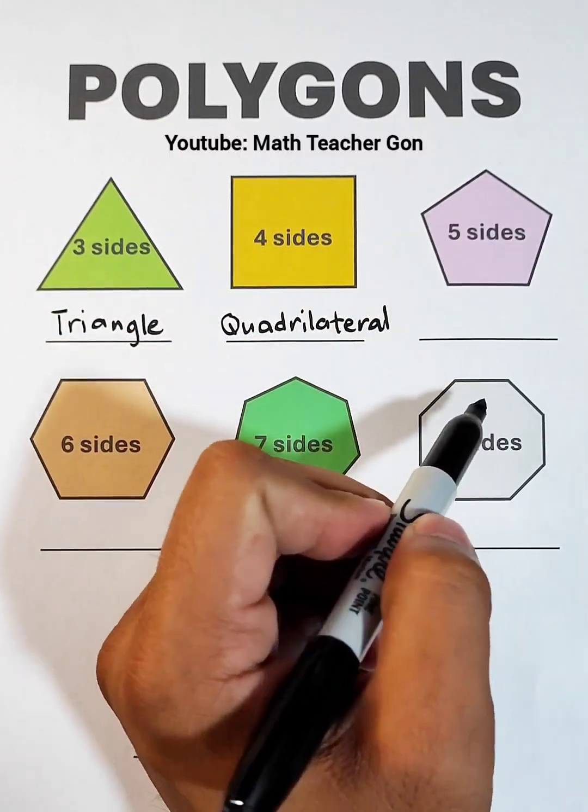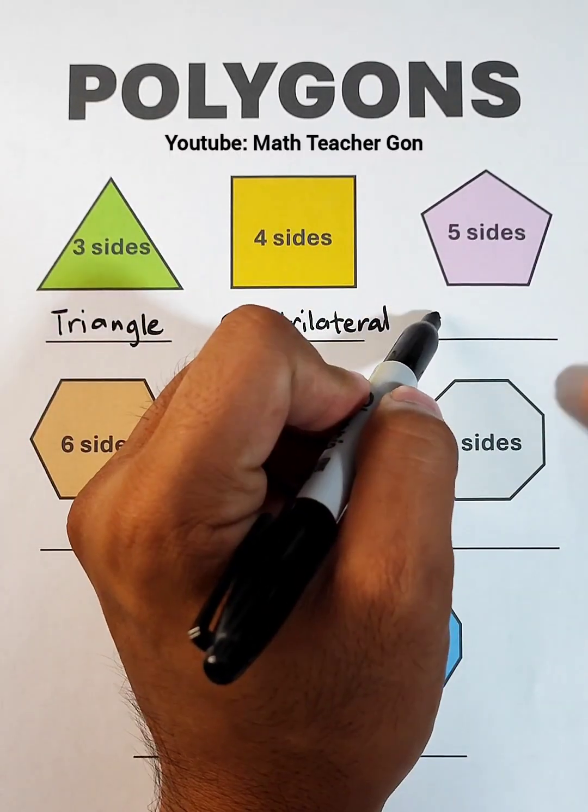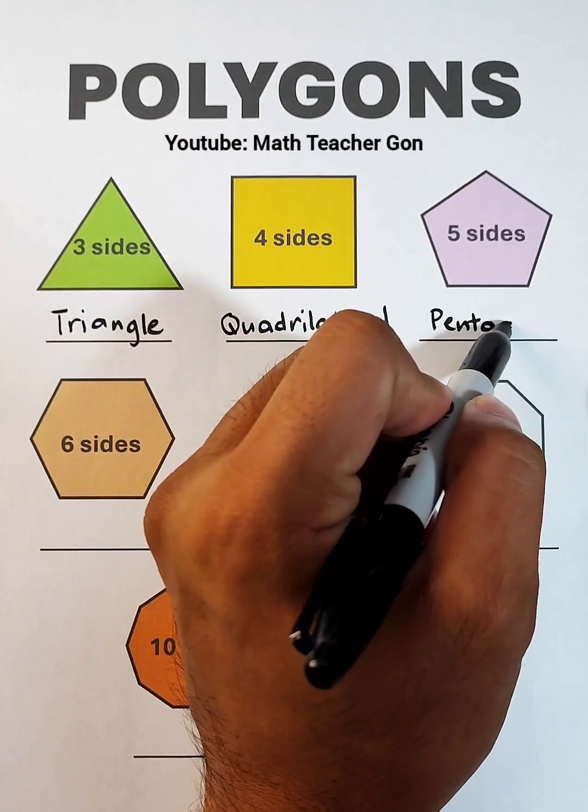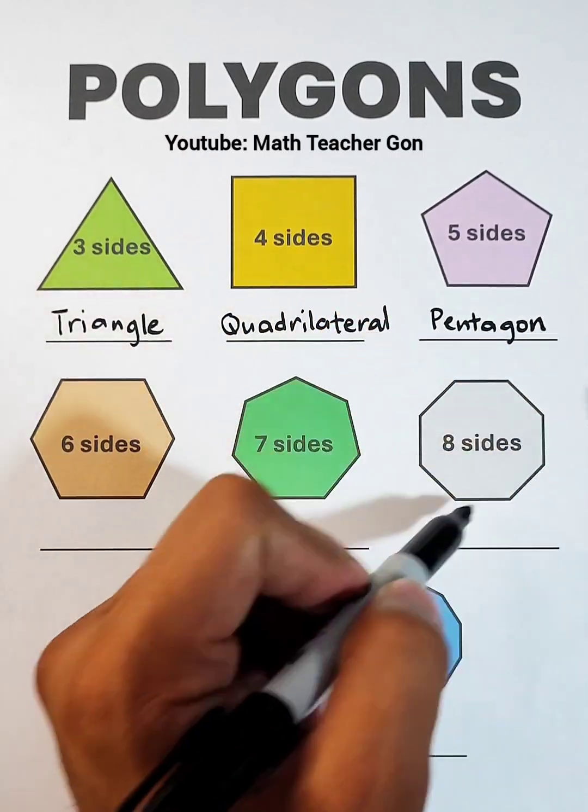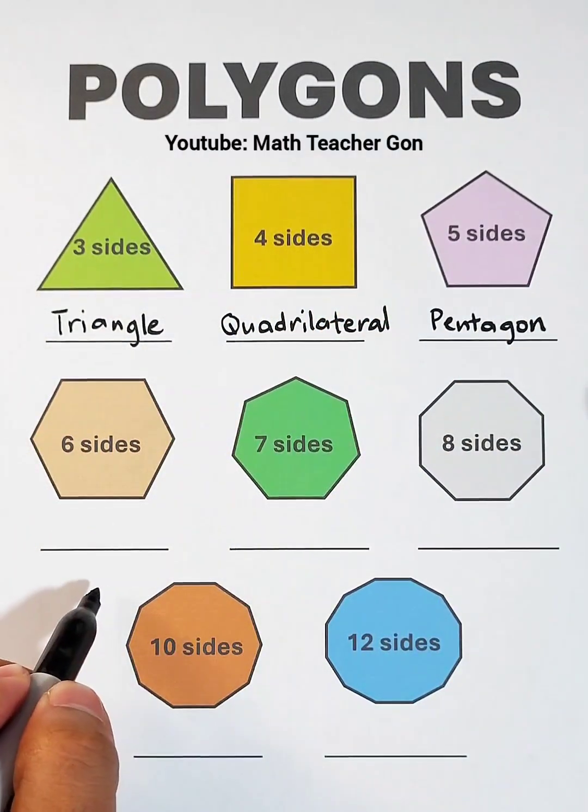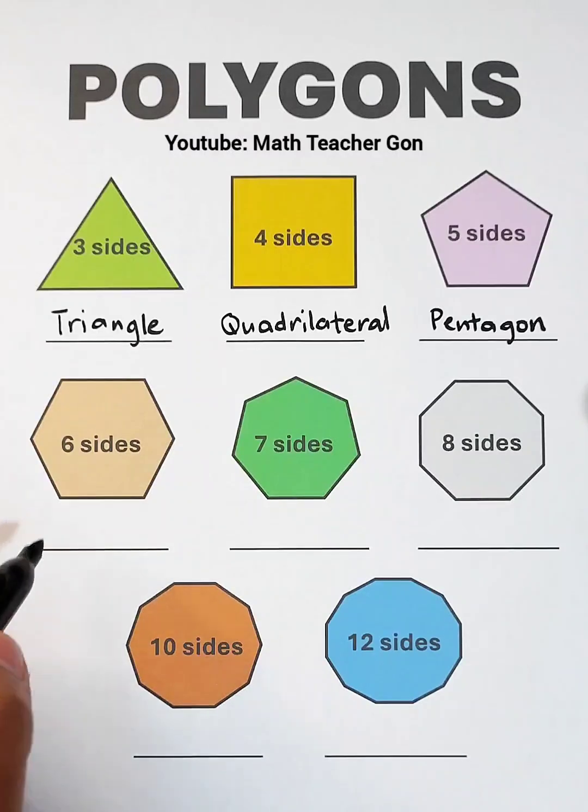Next, the polygon with five sides is the pentagon. Next, the polygon with six sides is the hexagon.